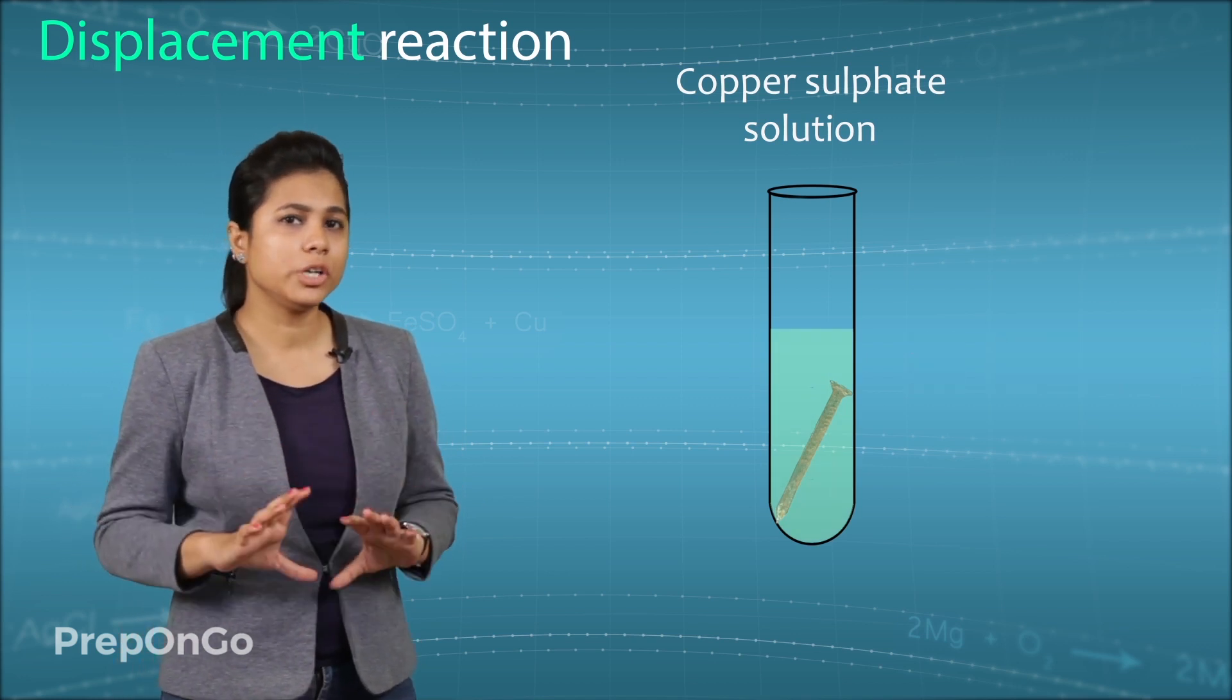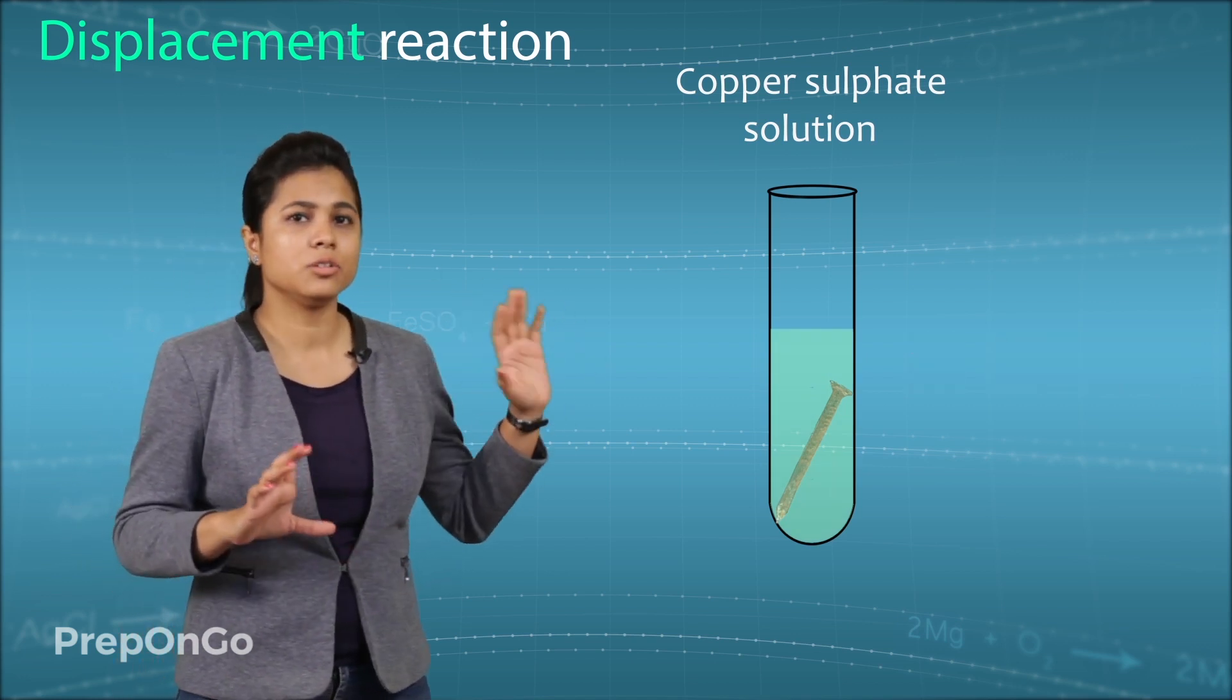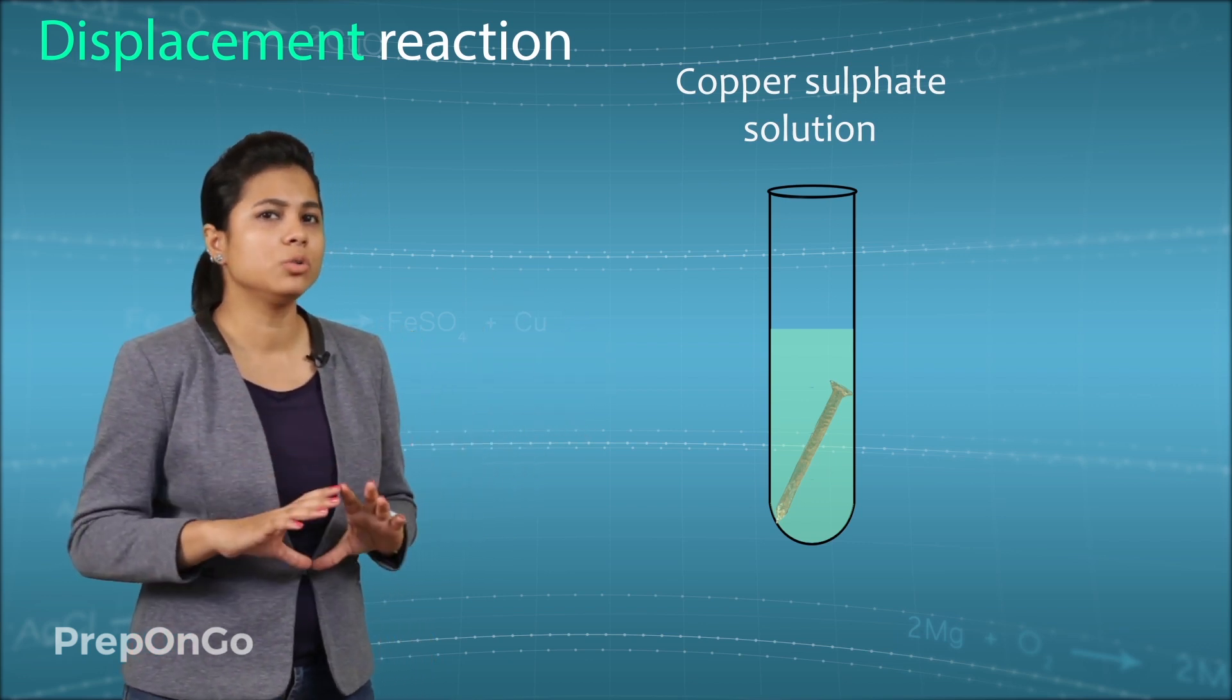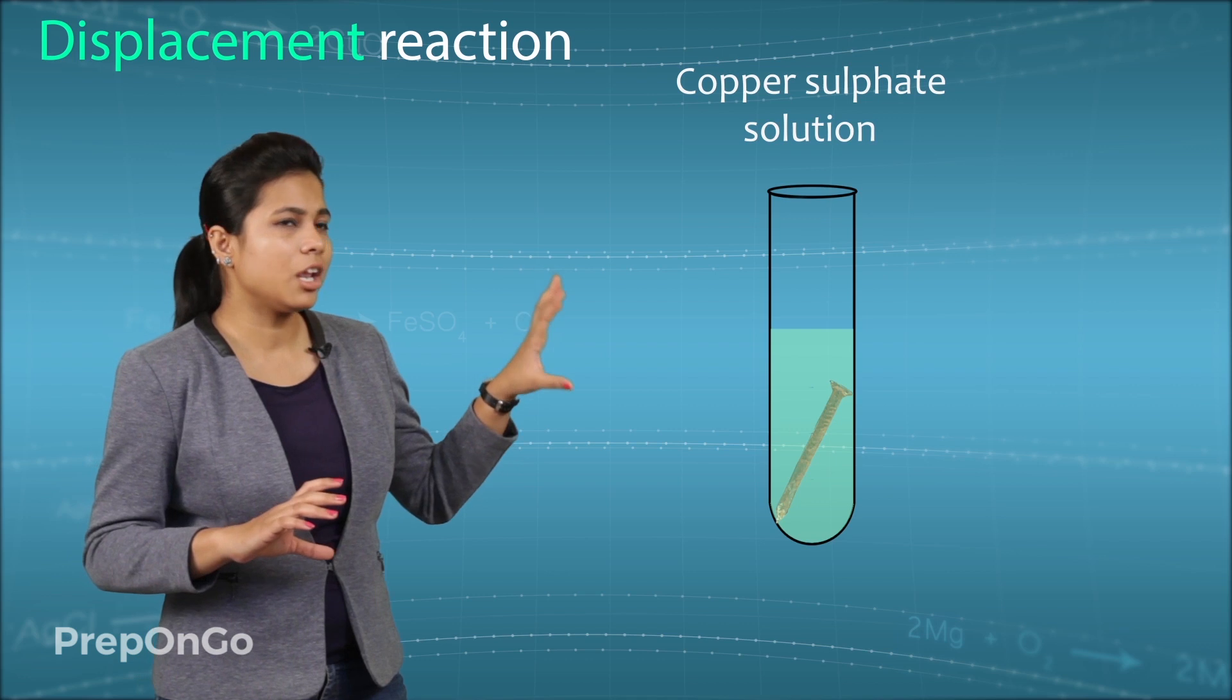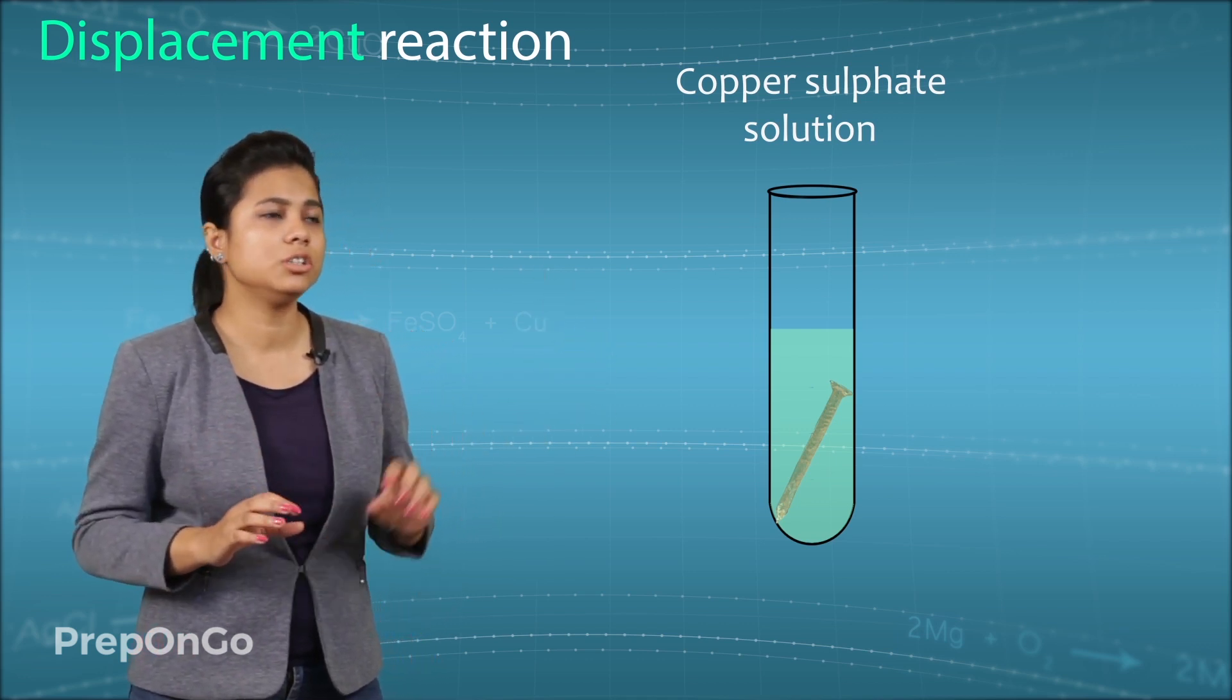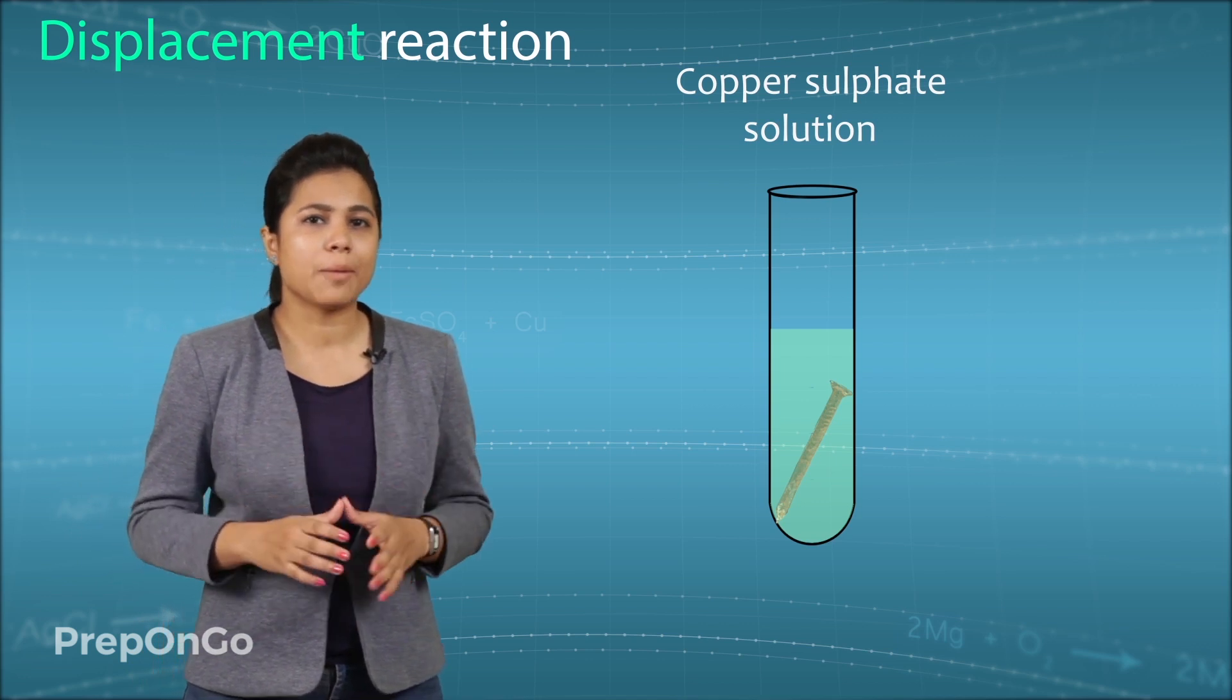After 20 minutes you are going to see that the iron nail which was first very clear now has a brown coating on it, and the color of copper sulphate solution which was initially blue has now turned to light green. What has happened here?